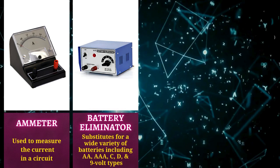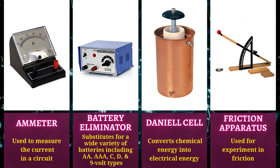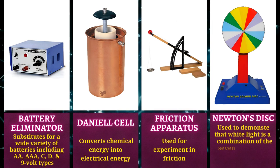Daniel cell converts chemical energy into electrical energy. Friction apparatus is used for experiment in friction.